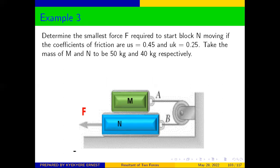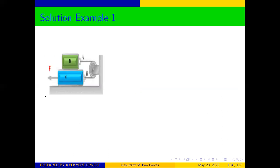Determine the smallest force F required to start the block moving if the coefficients of friction are μs = 0.45 and μk = 0.25. Take mass of block M and N to be 50 kg and 40 kg respectively. This is our diagram, and we have been asked to calculate the smallest force P which will cause motion of block N.